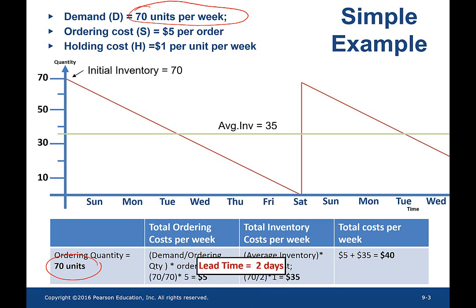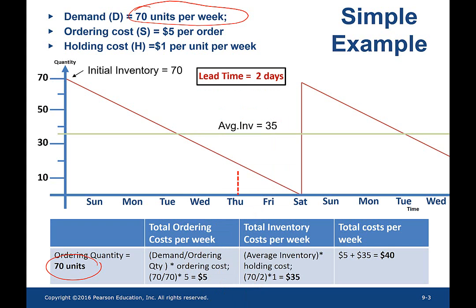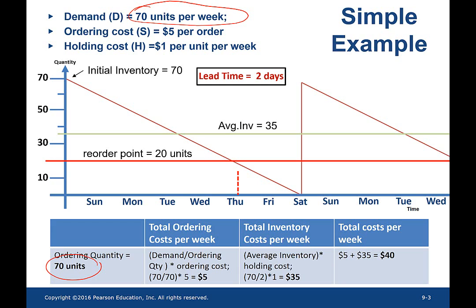Now, let us assume the lead time is 2 days. The buyer has to place an order of 70 by the end of Thursday. Equivalently, when the buyer's inventory level is equal to 20 units, the buyer needs to place an order. To satisfy the demand on Friday and Saturday, the buyer needs to carry 20 units since each day has a demand of 10 units.